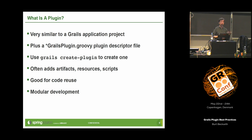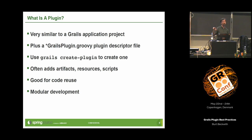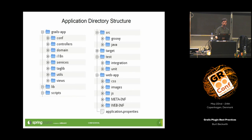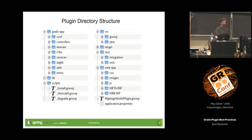In fact, converting an application to a plugin is pretty much as simple as adding a plugin descriptor — you can manually create that. If you had an application that was primarily something that could be shared, except for a few things specific to the app, you could refactor it into a separate project or literally convert it to a plugin in place. The standard procedure is just like creating an application — you use the create-plugin script.